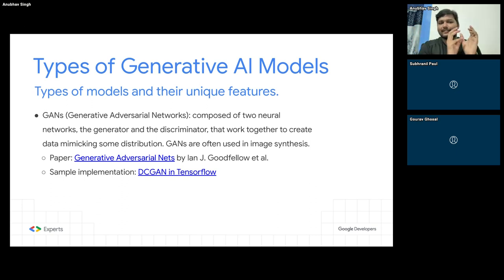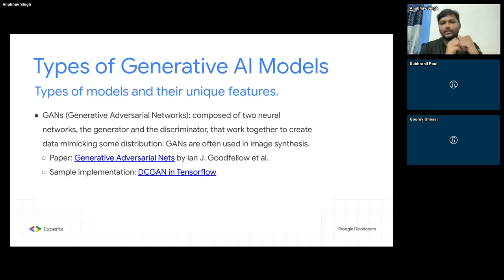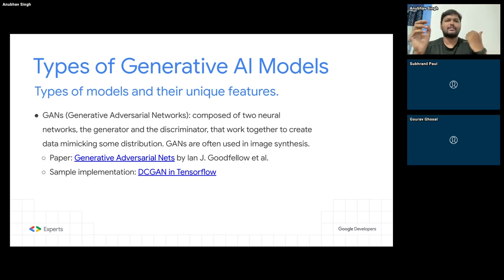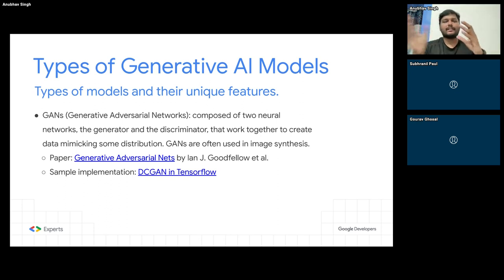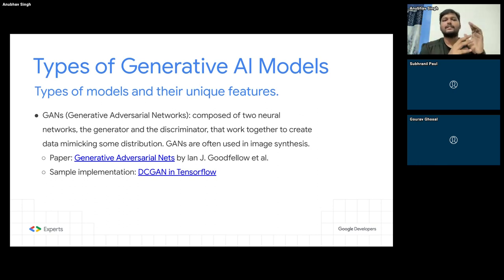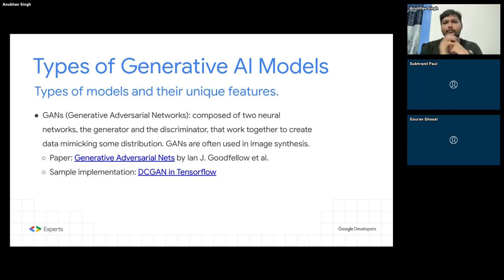The generator sees a million images of cats and dogs and tries to generate an image of a dog. The discriminator has also seen all those images and is trained to classify whether a given image is a dog or something else. So every time the generator generates an image of a dog, the discriminator tells it whether it looks like a dog — whether it looks real or fake. This keeps going in iterations, millions of times.